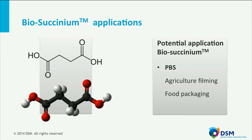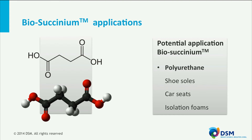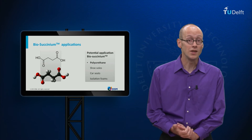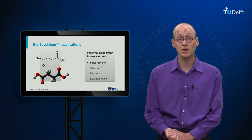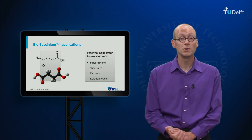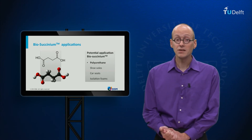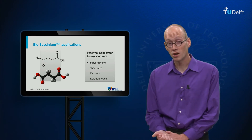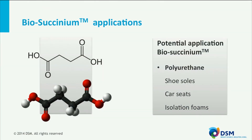For bio-succinium we foresee many different applications. The first application we focus on would be biodegradable plastics, called PBS, in fact a co-polymer of succinic acid and butanediol. This is a new product which can be used for agriculture filming, food packaging and multiple other applications. The second application we focus on is polyurethane. This product already exists; however, now we want to replace the used adipic acid, which is petrochemical based, so with succinic acid we would like to green this product. Applications are also very diverse in this field, like shoe soles, car seats, but also isolation forms. The third product we are focusing on, which can be successful if cost prices are low enough, is butanediol. Succinic acid can be used to create this product, which has already a big existing megaton market in itself, so that would open up much bigger volumes for bio-succinium.